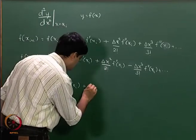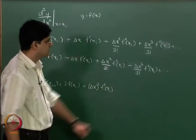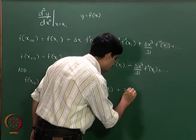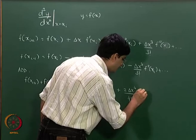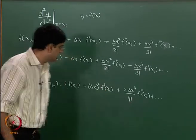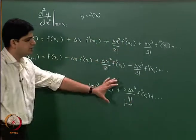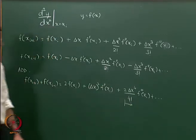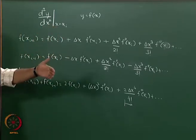We will have plus delta x squared times f double dash of x(i). The odd-order terms cancel. The leading error term that remains is 2 times delta x to the power 4 divided by 4 factorial times f four-dashes of x(i). Applying the mean value theorem, we convert to zeta, where zeta lies between x(i-1) and x(i+1).